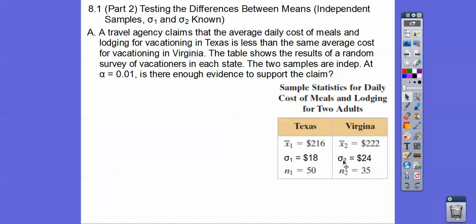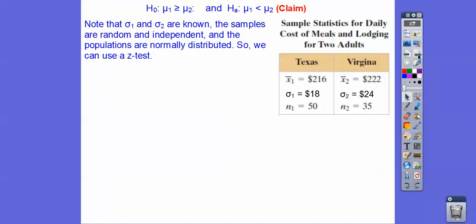Notice the standard deviations, the population standard deviations are given. So our claim is that it's less than and so our null is going to be greater than or equal to.